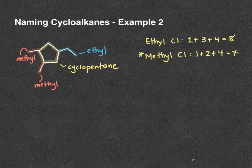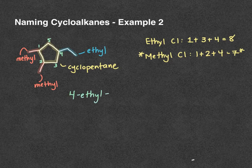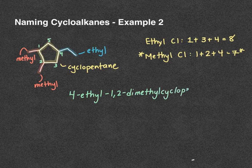It doesn't matter which methyl we assign as carbon one, so we'll assign the top-left one and rotate counterclockwise to number the rest of the carbons on the ring. Once we've numbered our carbons we can list everything alphabetically: 4-ethyl-1,2-dimethylcyclopentane. As a reminder, the prefix 'di' does not count towards alphabetization.